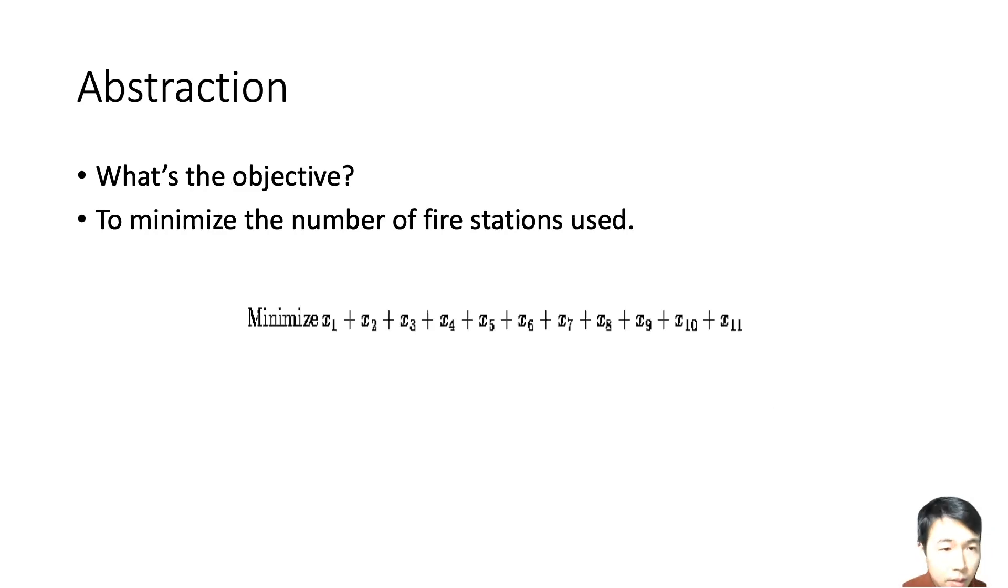What's the objective? The objective is usually to minimize or maximize something. In this case, we're trying to minimize the number of fire stations used, written as X1 + X2 + X3 until X11. The range of this is zero to 11. Without any constraints, we could say we want to place one fire station in each city. The range is going to be zero to 11 in this case.